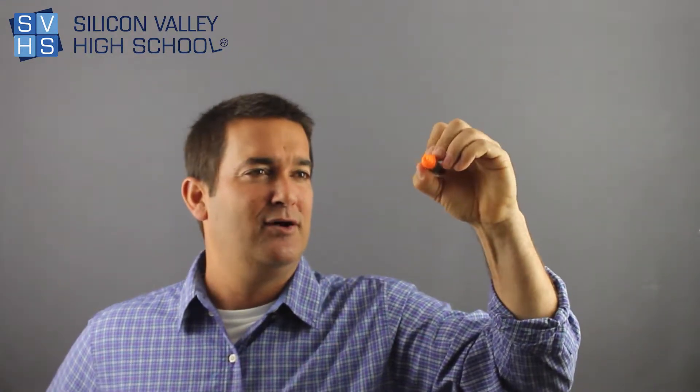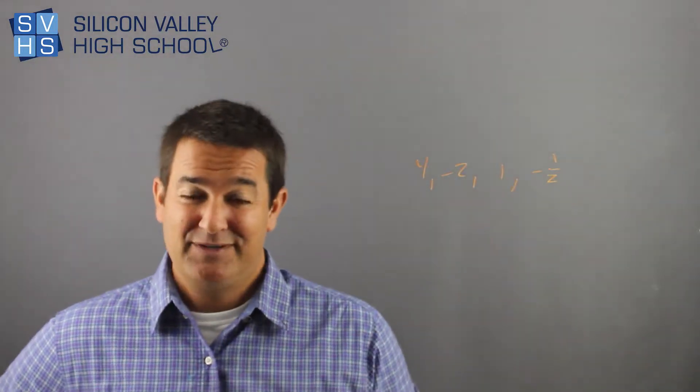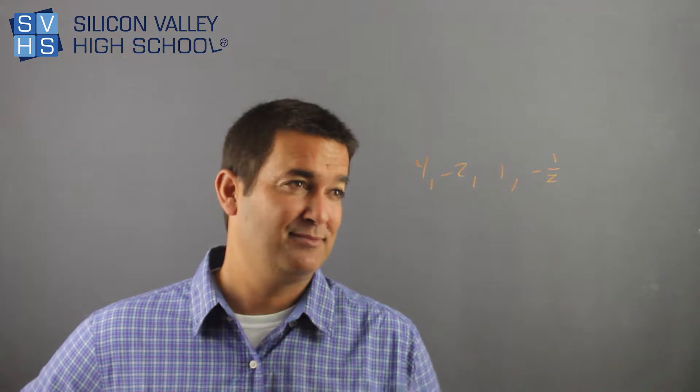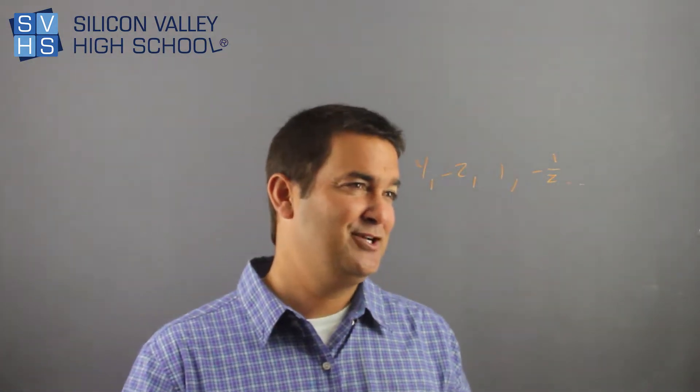You can also multiply by a negative every time. That's not like illegal somehow. So you could have 4, negative 2, 1, negative 1 and a half. It looks to me like I'm dividing by negative 2 both times, which I am geometric and that common ratio is negative 2. So that's one thing.